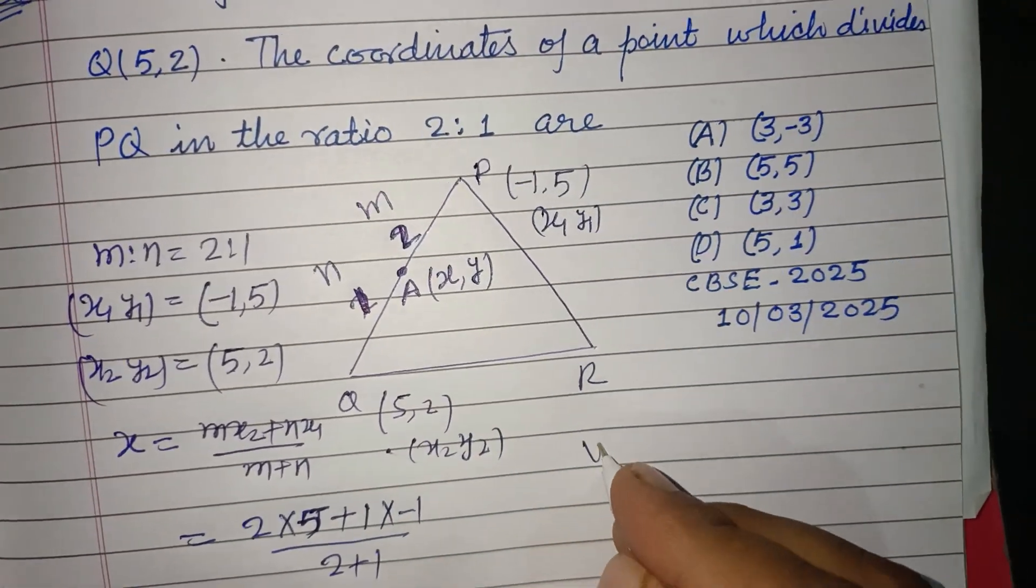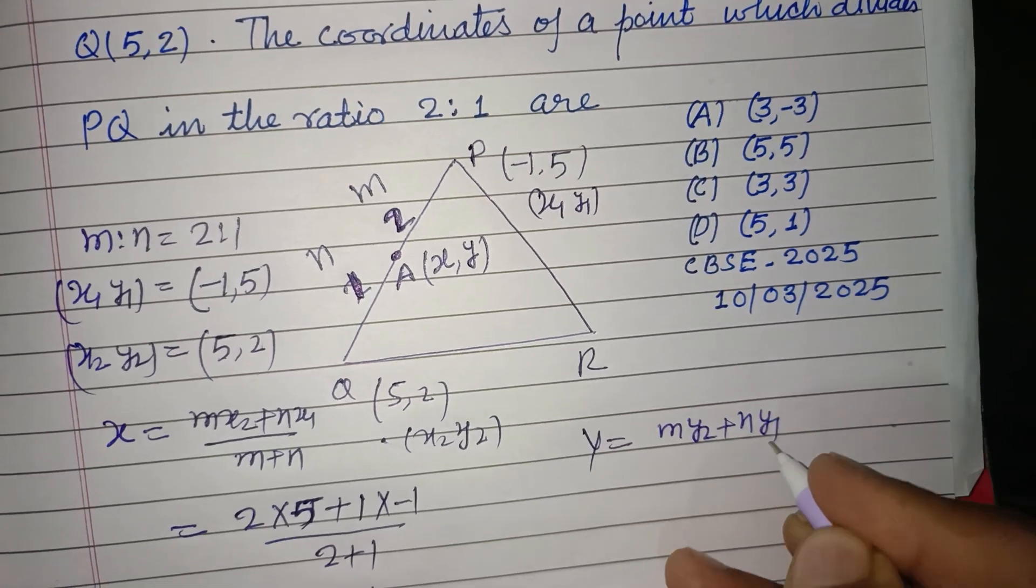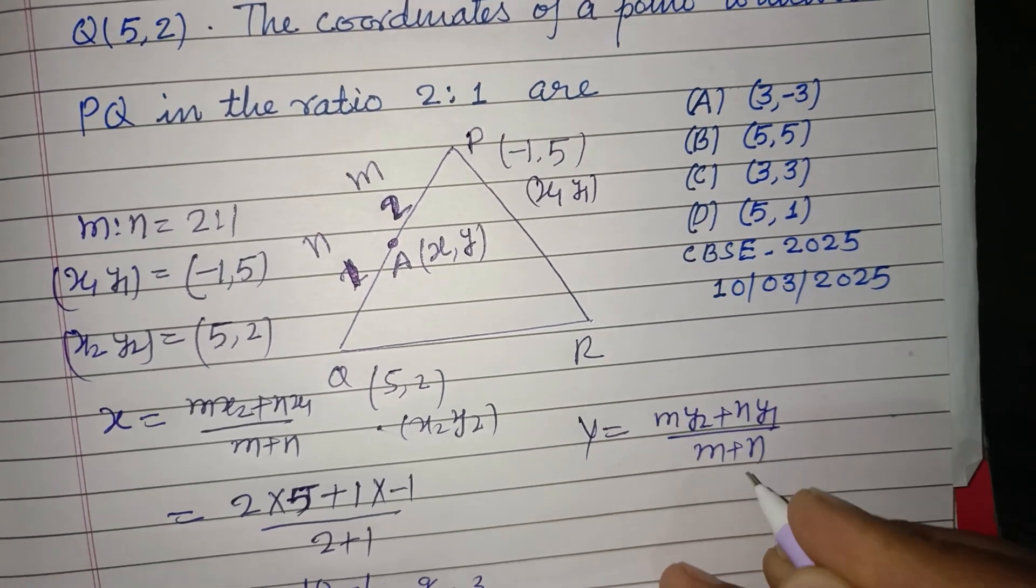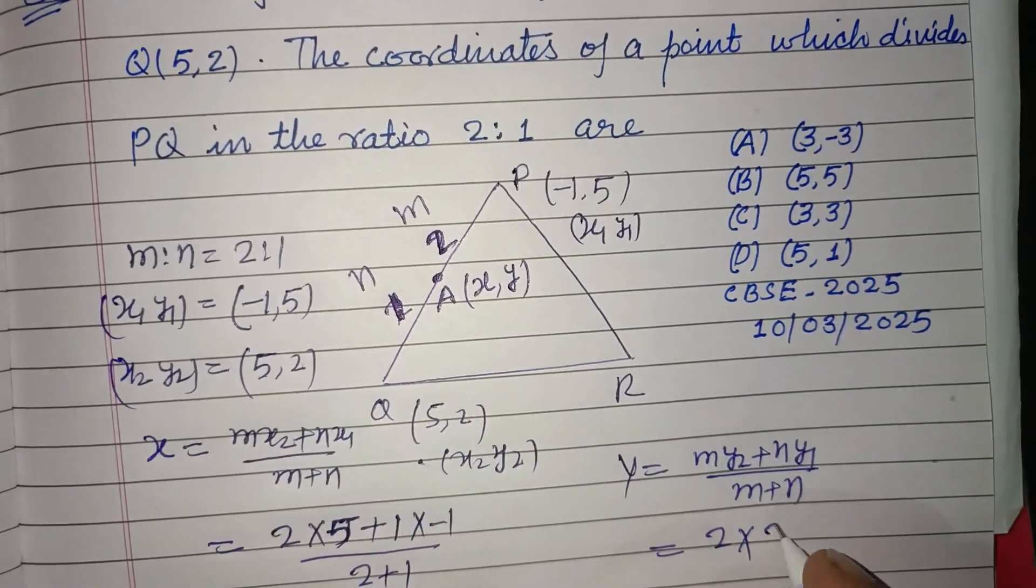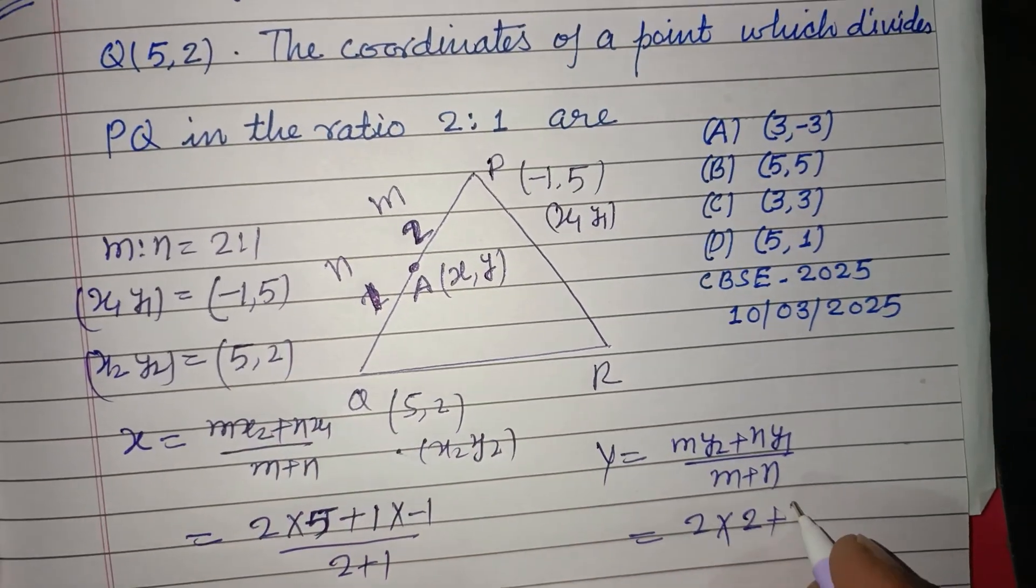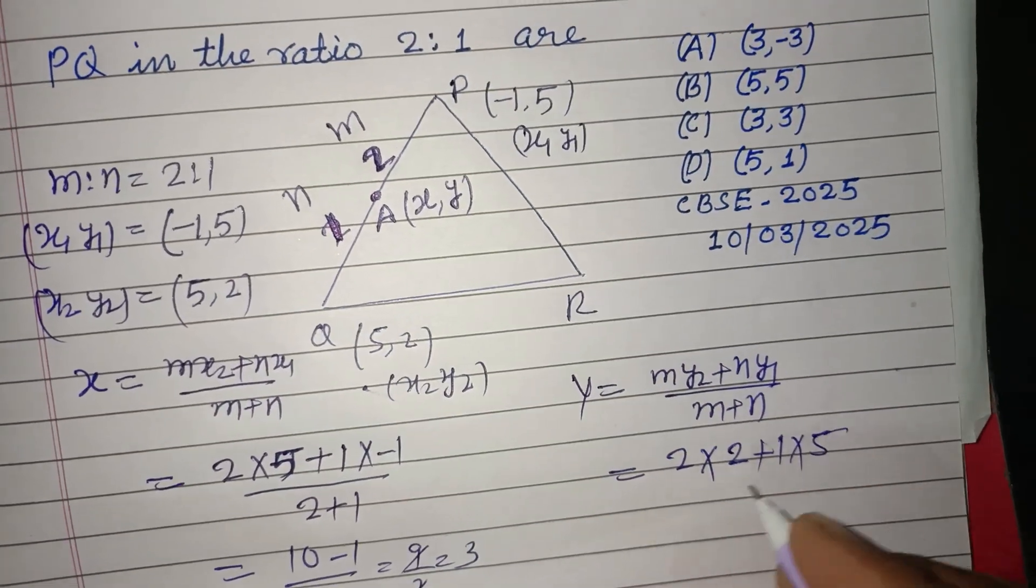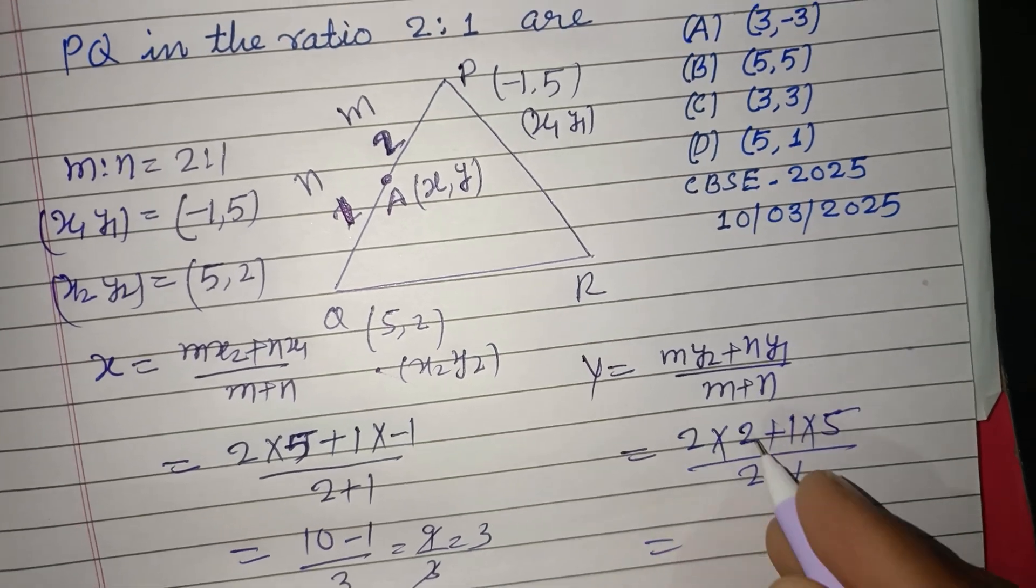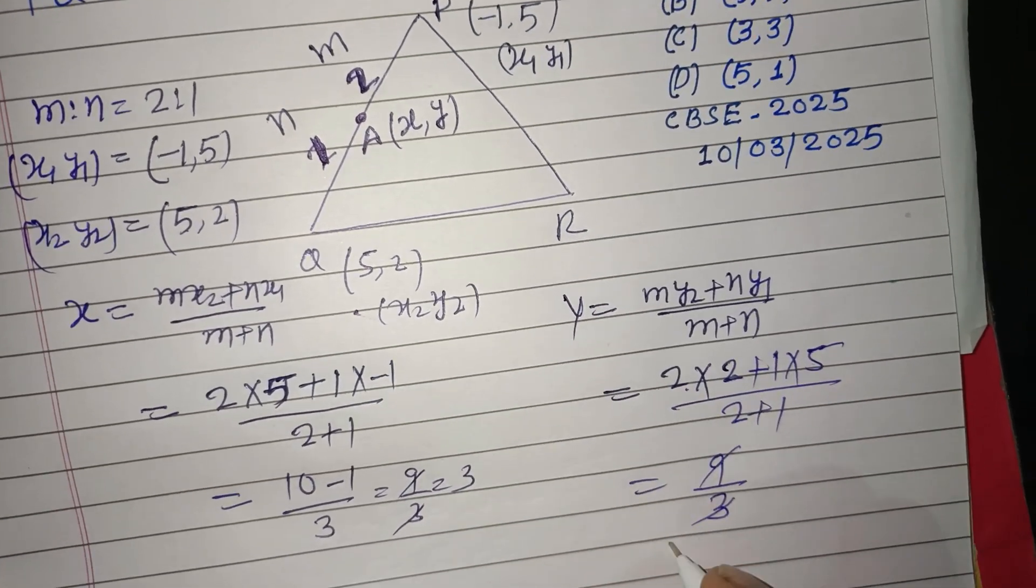Now Y equals (MY2 + NY1)/(M+N). So M is 2, Y2 is 2, N is 1, Y1 is 5, over (2+1). 2×2 is 4, 4+5 is 9, 9/3, that is 3.